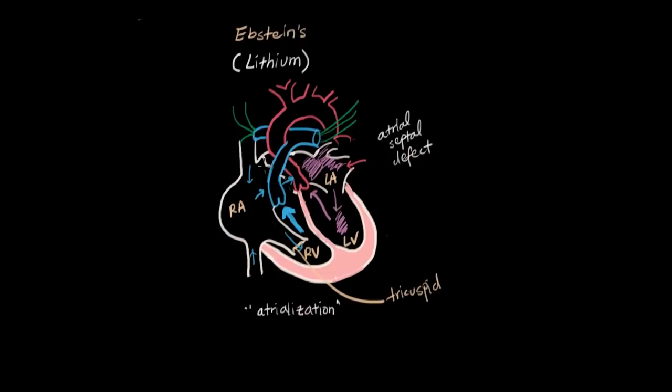Because all we care about is the resistance in here dropping enough so that most of the deoxygenated blood goes to the lungs instead of to the left side. Then we have less mixing, and that will give the left side more red blood instead of purple. And that's basically all we care about is functionally how strong the shunt is. So as long as most of the blood is going to the lungs, then we're okay.